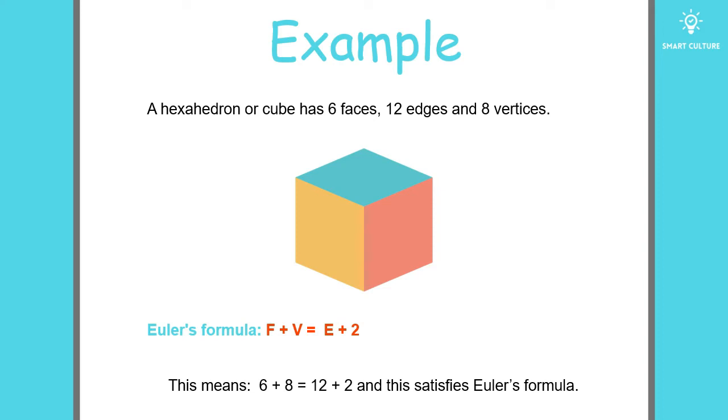We know that the cube has six faces and eight vertices, so six plus eight on the one side. We know that this cube has 12 edges, so we write 12 on the other side plus two.